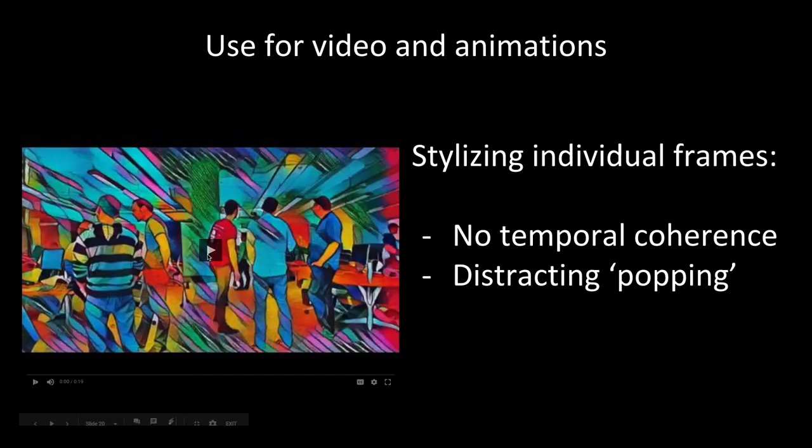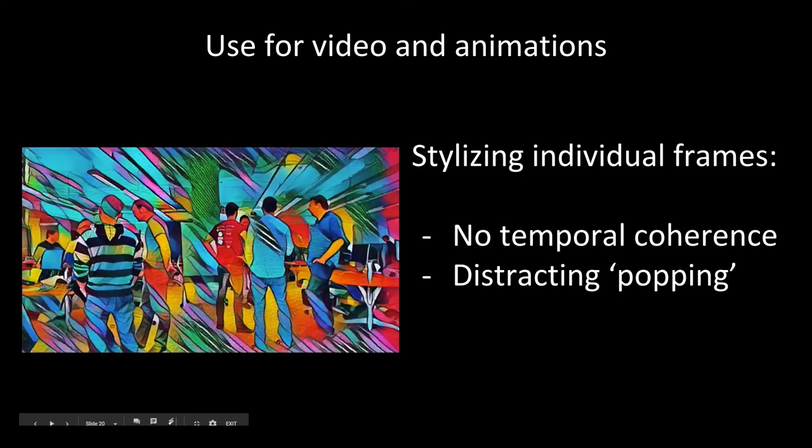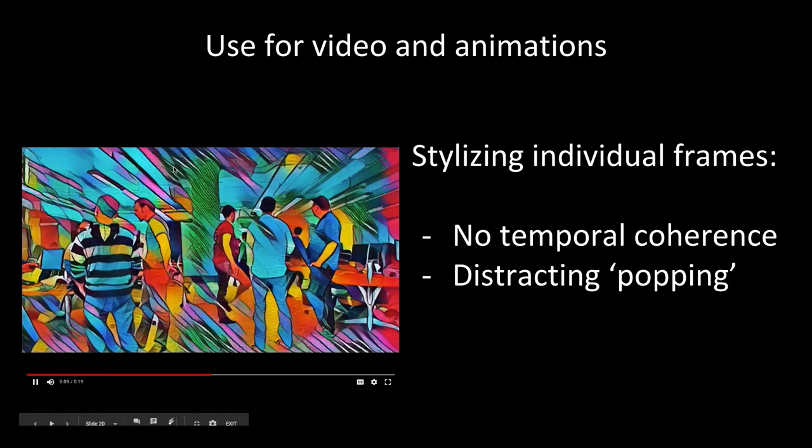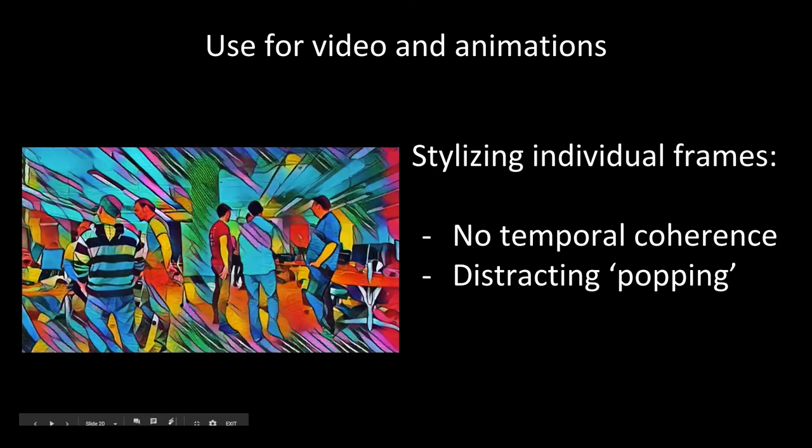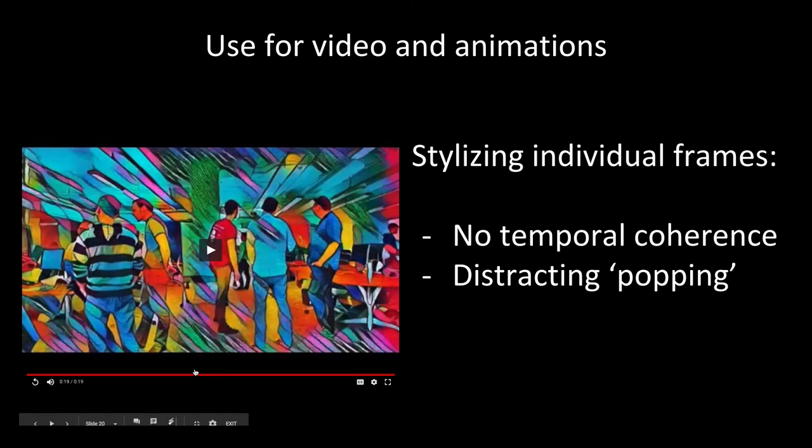Here I'll show a video of what we obtain if we use Johnson's technique out of the box for video, applying it frame by frame. As you can see, our office stylized with one of those murals shows lots of popping around the column at the top — quite distracting, and it wouldn't do for real-time use. The reason for this popping is that no temporal coherence is enforced by the network — every frame is processed independently and we didn't tell the network that this would be annoying.